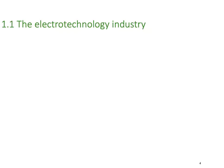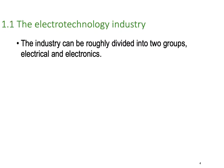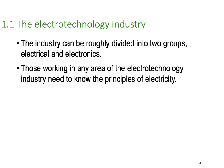The electrotechnology industry can be roughly divided into two groups: electrical and electronics. Those working in the area of electrotechnology need to know the principles of electricity — basically, that's everybody in electrical or electronics.